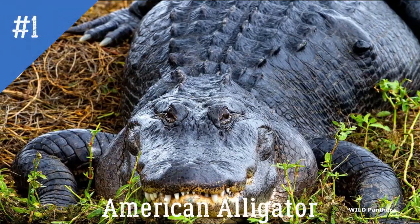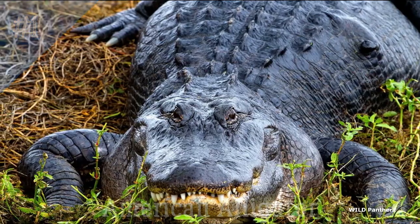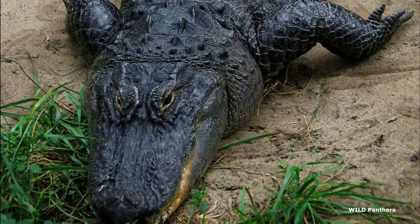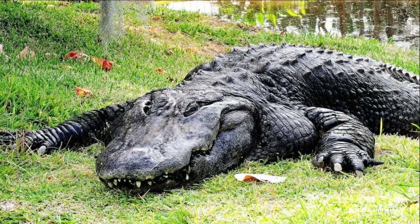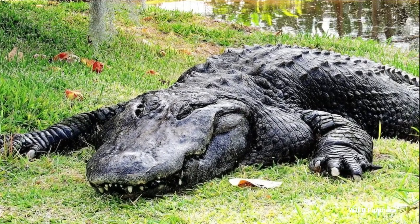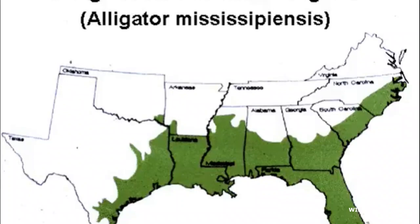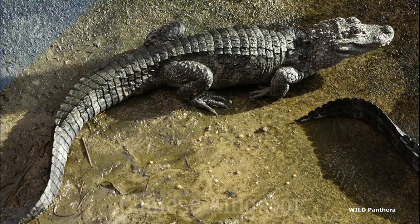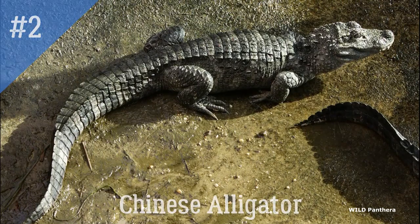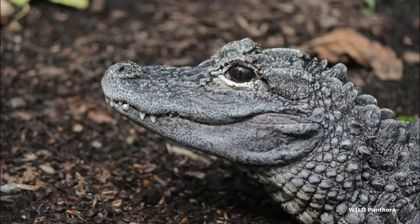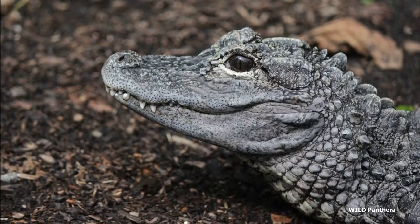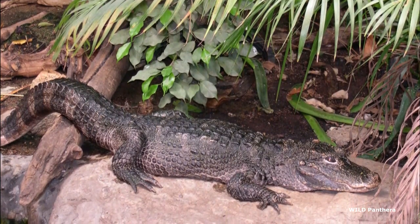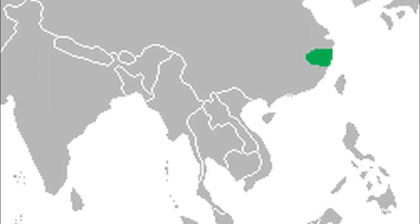The species that come under the family Alligatoridae: 1. American Alligator — Alligator mississippiensis is a large-sized alligator which is found in coastal, marine, and wetland habitats of the southeastern United States.